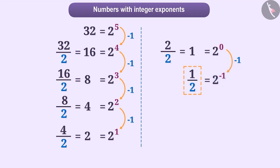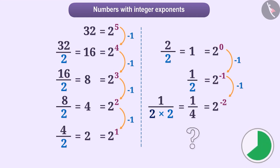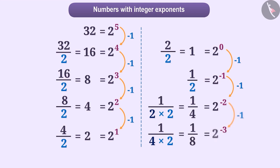If we divide this number by 2, we will get 1 upon 2 into 2, which equals 1 upon 4. Since we have divided by 2, we will reduce the exponent by 1. That is, minus 1 minus 1 equals minus 2. In this way, 1 upon 4 is equal to 2 to the power minus 2. Can you tell what will be the next step in this pattern? Give it a thought. Here we will again divide by 2, and the exponent will be subtracted by 1 again, from which we get 1 upon 8 is equal to 2 to the power minus 3.